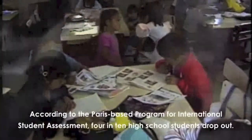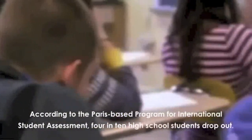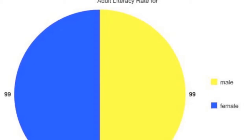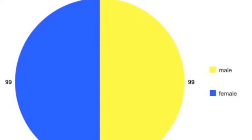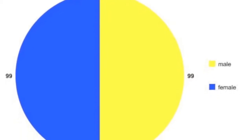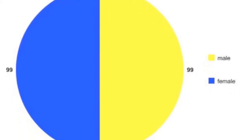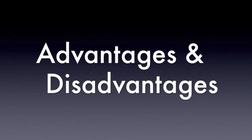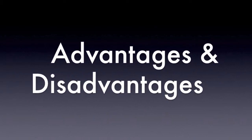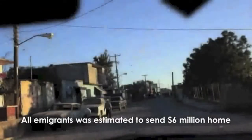Education is also one of the pull factors. Families and young people migrate to the US because the US offers access to better education. In the US, the adult literacy rate is 99%.